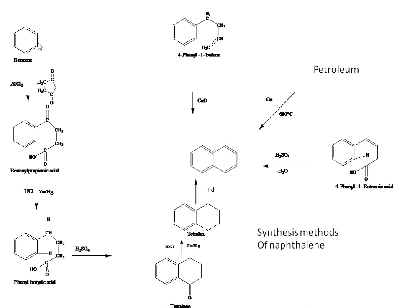To recap Haworth synthesis: benzene reacts with succinic anhydride in the presence of aluminum chloride to form benzoylpropionic acid; the carbonyl group is reduced to form phenylbutyric acid; cyclization gives tetralone; carbonyl group reduction gives tetralin; and final reduction gives naphthalene.